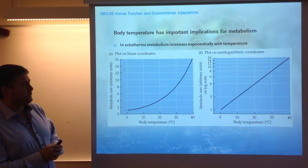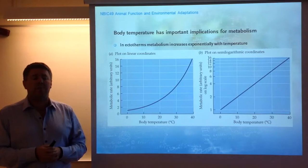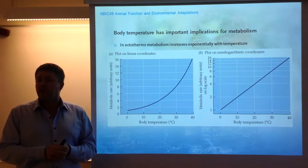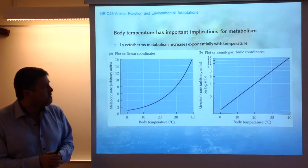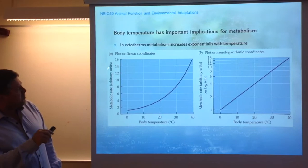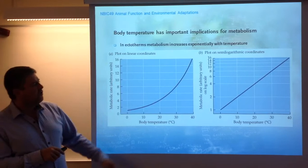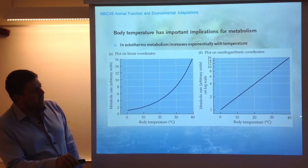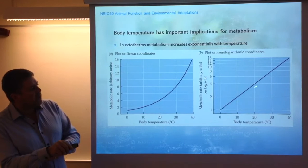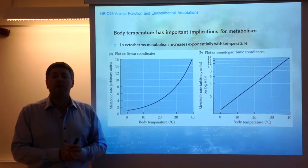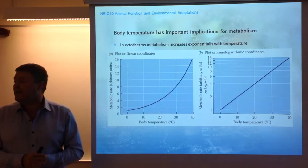Body temperature is an important parameter because it has large implications for metabolism. As we were discussing last week about aerobic scope and the oxygen capacity limited thermal tolerance theory, metabolism — metabolic rate — is a product of temperature. As body temperature increases, so does metabolism. When you plot this data on logarithmic scales on both axes, the graph shows a linear relationship. This is true for animals that do not regulate body temperature — animals that allow their body temperature to fluctuate with environmental temperature. These are the animals we call ectotherms, that don't produce their own body heat.